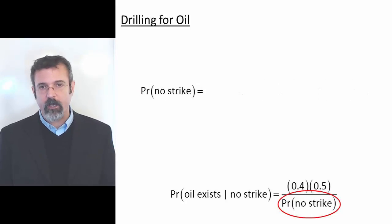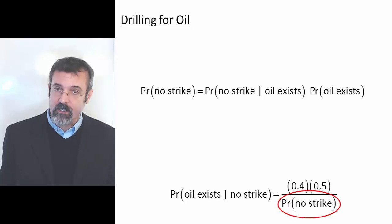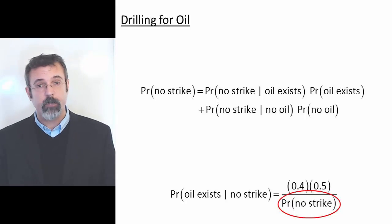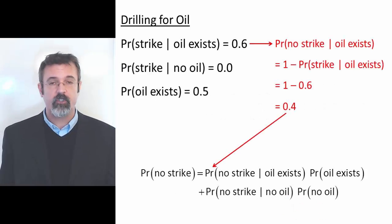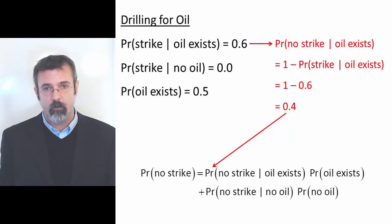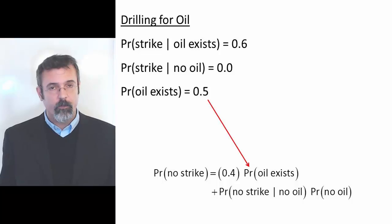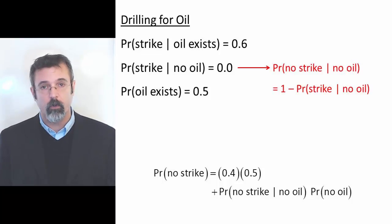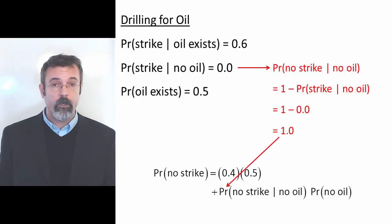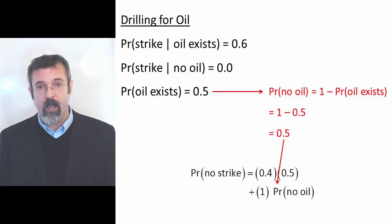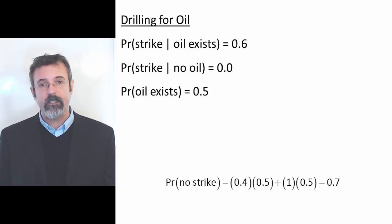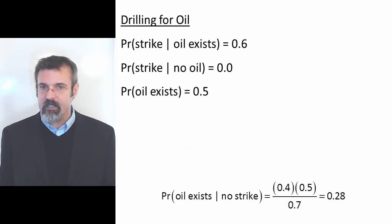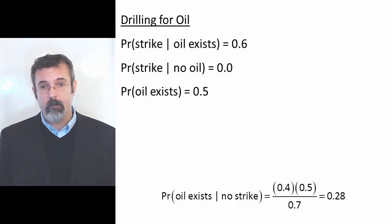Using that equation, the probability of not striking oil is the probability of not striking oil given that oil exists, multiplied by the probability that oil exists, plus the probability of not striking oil given that there is no oil, multiplied by the probability that there is no oil. The first term is 0.4, the probability that oil exists is 0.5, the probability of not striking oil when there's no oil is 1.0, and the probability of there being no oil is 1 minus 0.5, or 0.5. Putting it all together, the probability of not striking oil is 0.7. We can now complete our Bayesian equation: the probability that oil exists given that we did not strike oil is 0.4 times 0.5 divided by 0.7.